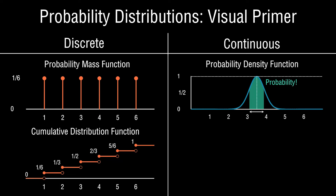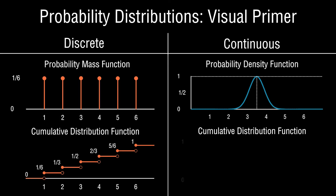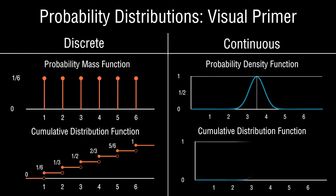Just like the probability mass function in the discrete case, for a probability density function we can also compute its cumulative distribution. The cumulative probability for a random variable is simply the probability of an outcome or less. Similar to the discrete case, the cumulative distribution starts at zero — there is a cumulative probability of zero of being less than or equal to minus infinity — and it gradually asymptotically approaches one. We derive this function by integrating across the probability density function, finding the area under the curve for each outcome.